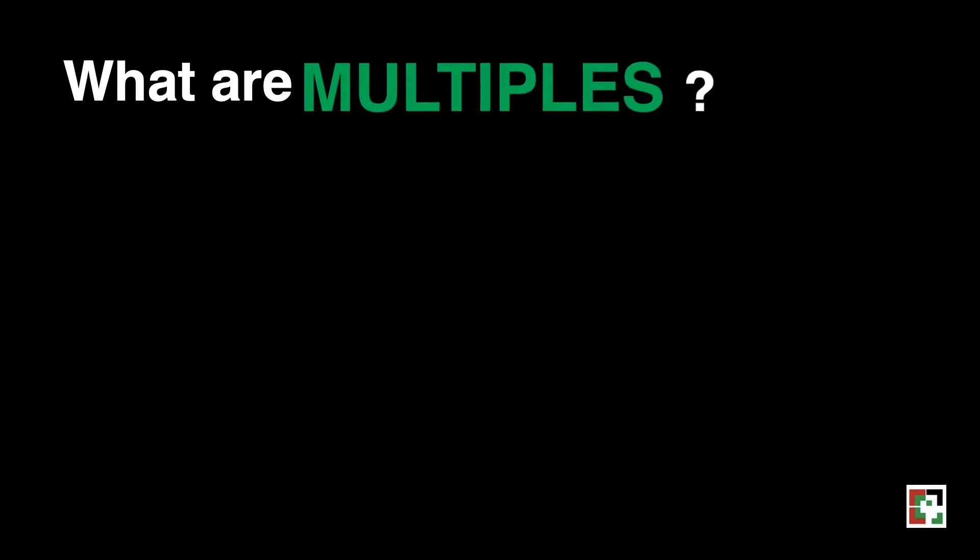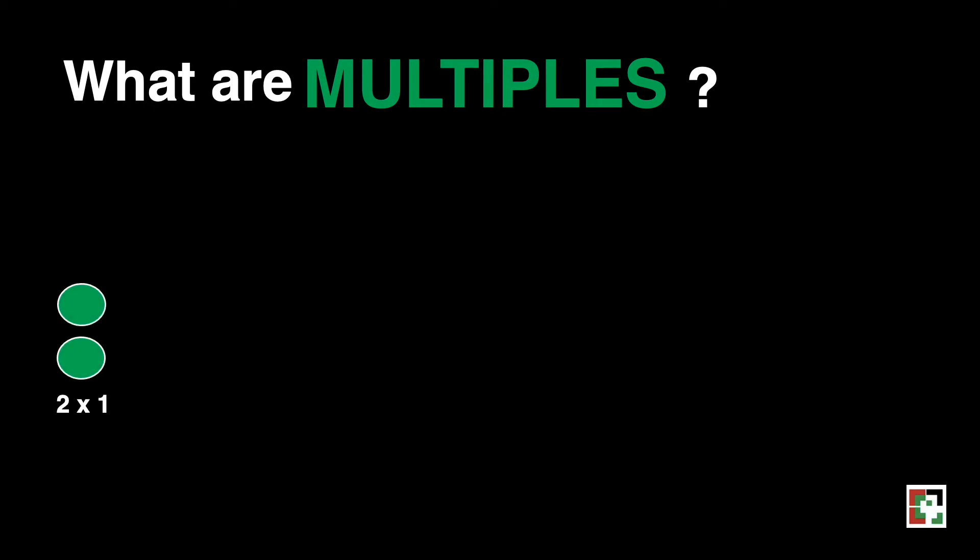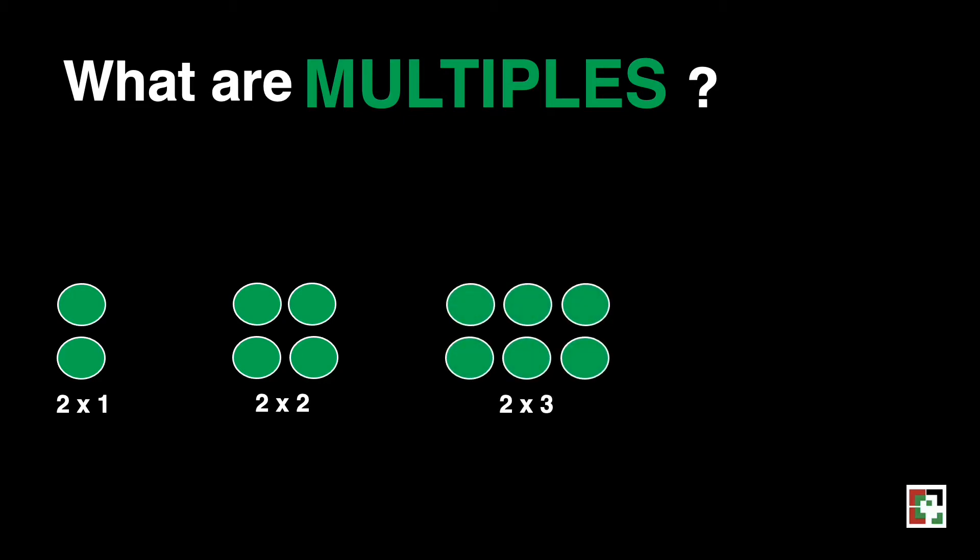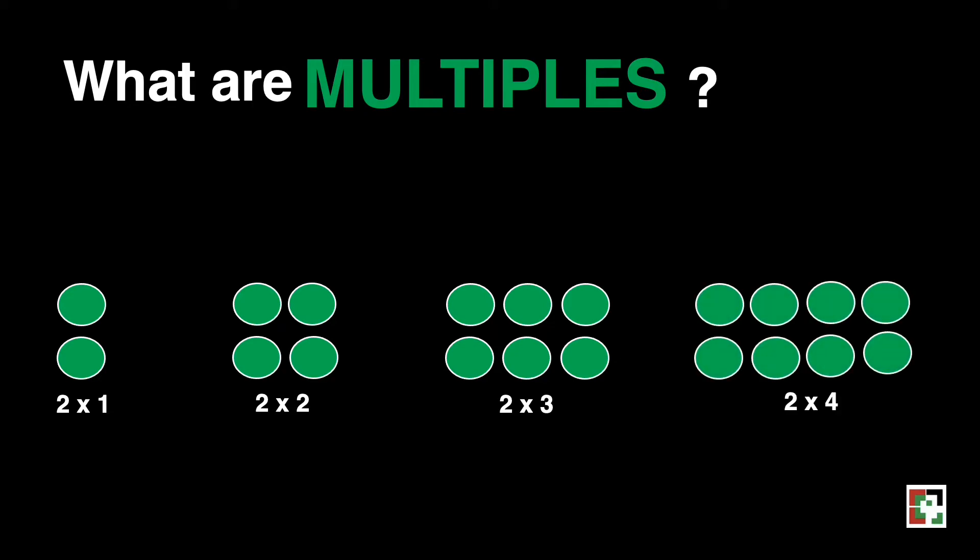Let's say for example, we have here two circles. And we will have it times 2, and that is 4 circles. And if we're going to multiply 2 by 3 again, we'll have 6 circles. If we wish to multiply 2 by 4, then of course we'll generate 8 circles.